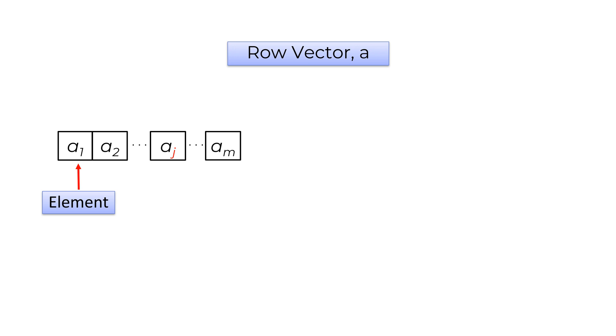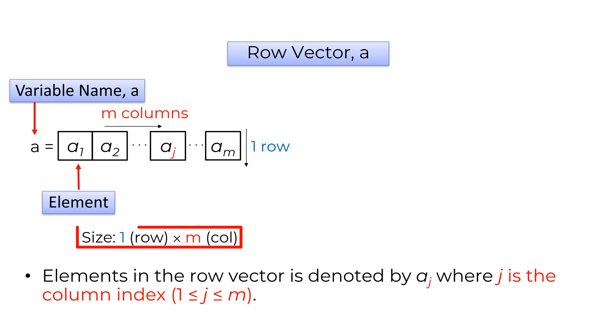There are two types of vectors: row and column vectors. The row vector is a one-dimensional array of elements in the horizontal direction. In this diagram, the row vector name is A and each element is represented by A subscript J, where J is the index number from 1 to M. The index number should be an integer. To refer to the size of row vector, we can call 1 by M vector. 1 means a single row and M represents the column size.